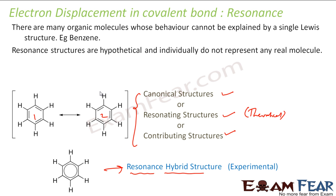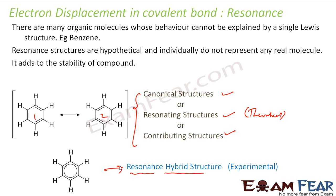Please note: canonical structures are theoretical and hypothetical — they are not real structures. The actual structure is the resonance hybrid structure. Resonance also adds to stability: the more resonating structures a compound has, the more stable it is. So if one compound gives 10 resonating structures and another gives 2, the one with 10 is more stable, given other factors are the same.